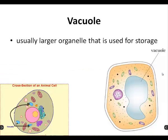Vacuole — usually a larger organelle used for storage. Plants, as you can see on the right side, usually have a much larger vacuole because they're doing all that photosynthesis and storing all that food. However, animal cells can have vacuoles as well — they just tend to not be as large. In general, the vacuole in plant cells is much larger than in animal cells. Prokaryotes don't have it. Get vacuoles somewhere on your bingo board.